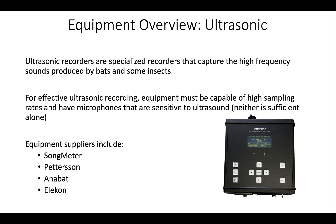One specialty type of equipment is ultrasonic recorders. These are passive acoustic monitoring devices specialized for capturing the high-frequency sounds produced by bats and some insects. For effective ultrasonic recording, the equipment must be capable of high sampling rates, but it must also have a microphone that's sensitive to ultrasound — neither alone is sufficient.